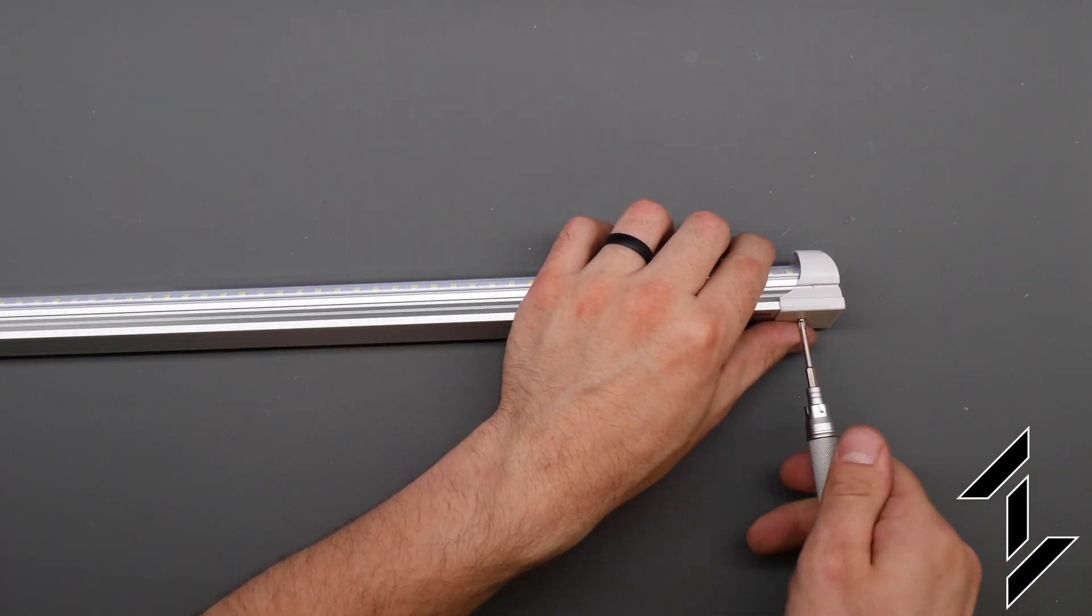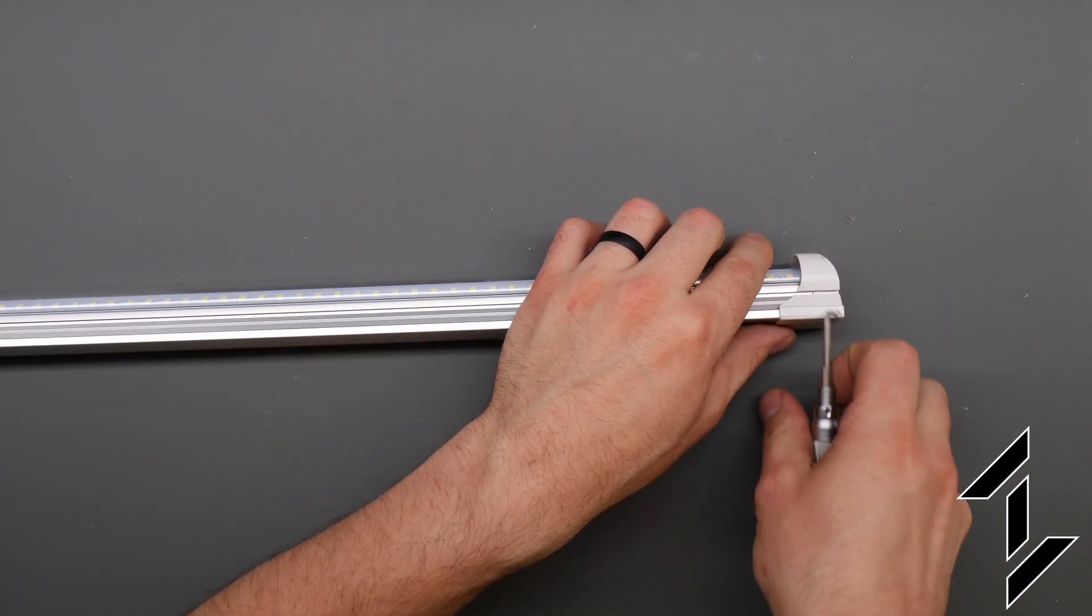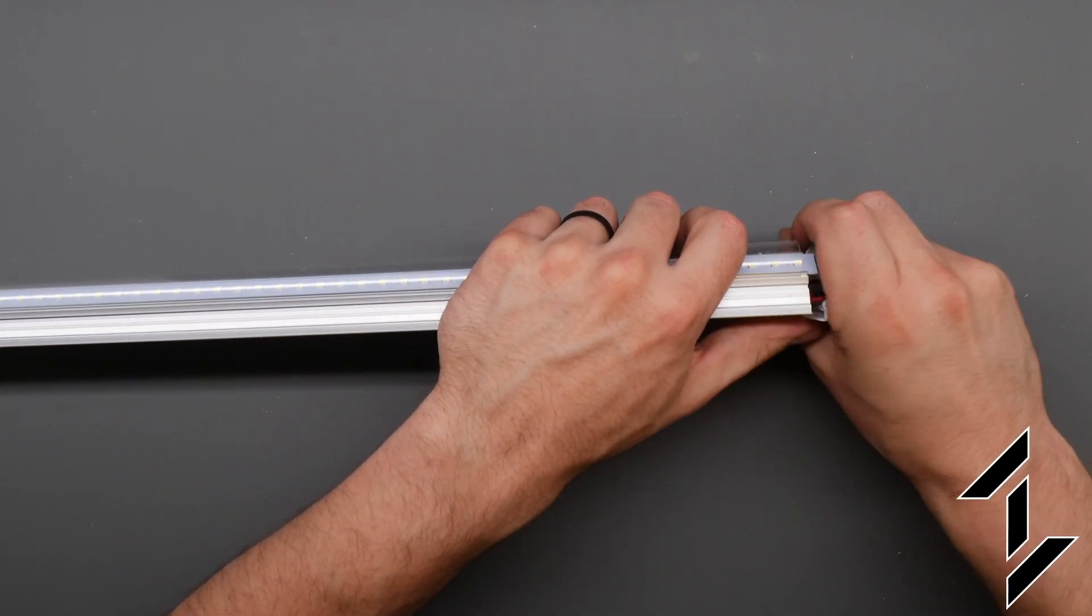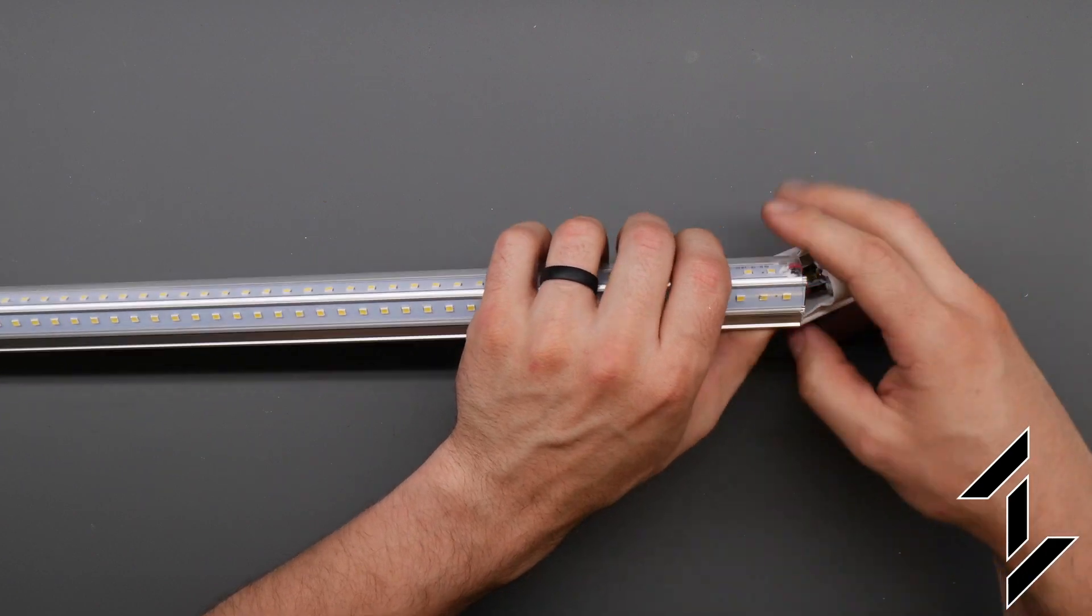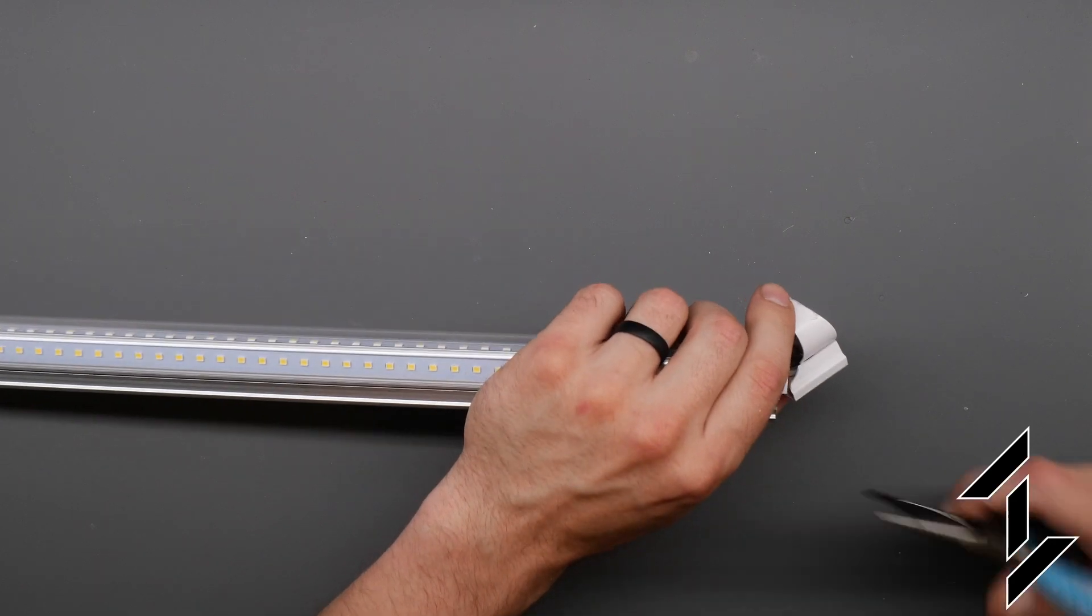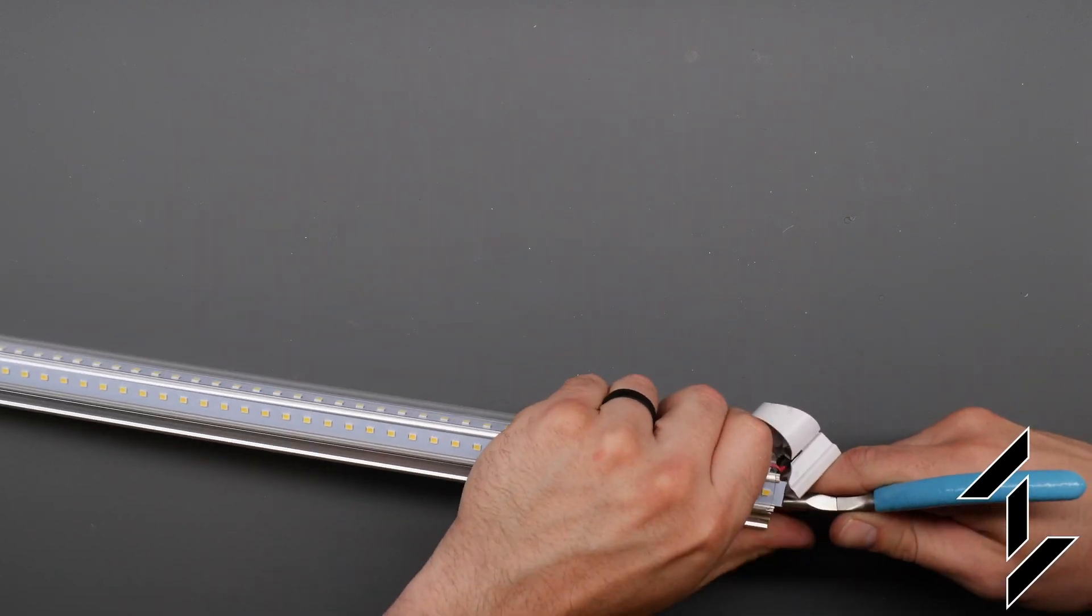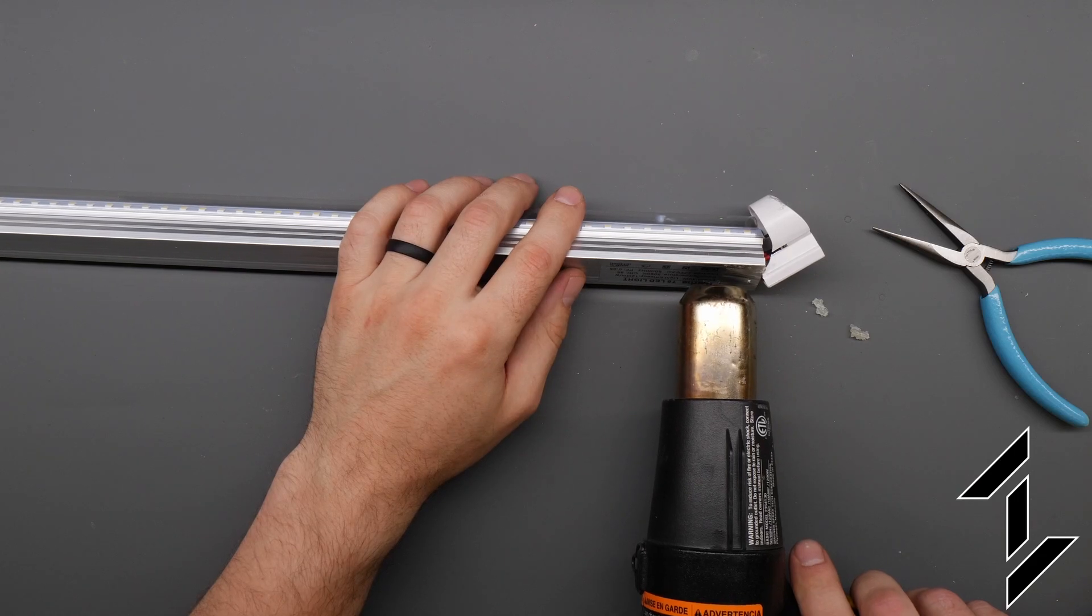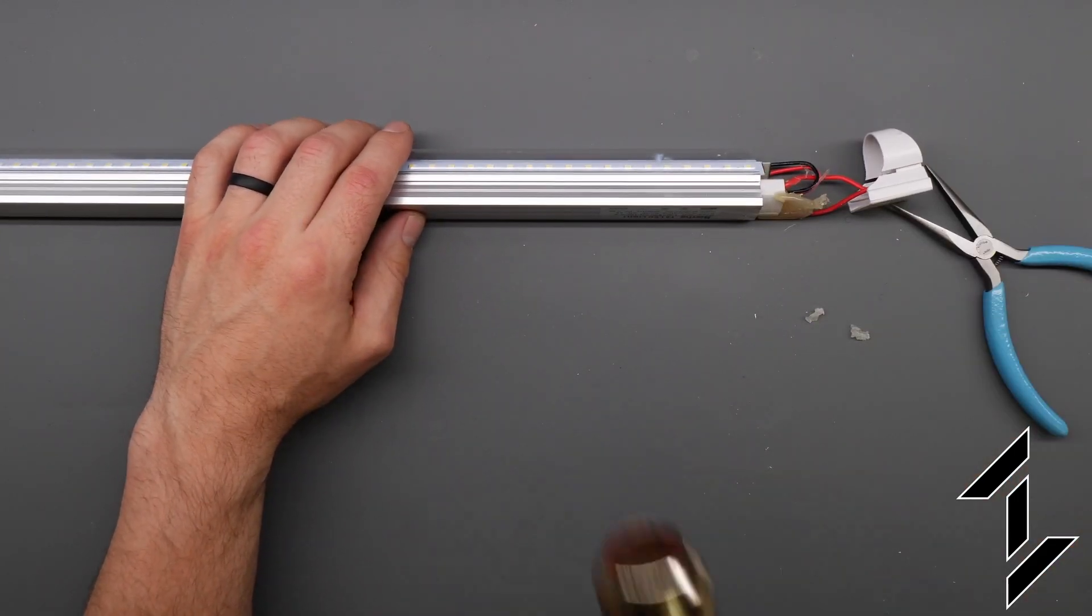Now this side should have the power supply inside somewhere. That will convert the 120 volt AC line to some DC voltage to power the LEDs. Looks like there's some hot glue in the end there. See if when in doubt with adhesive grab the heat gun.